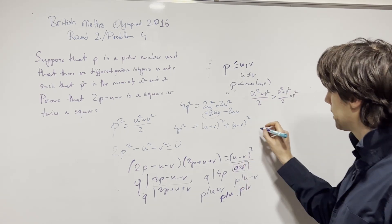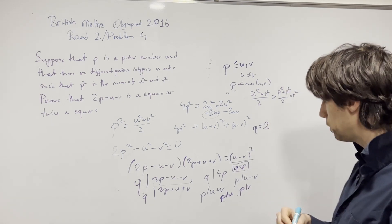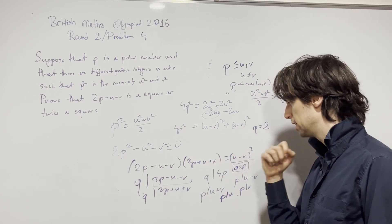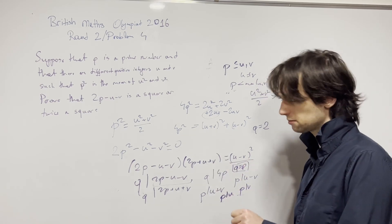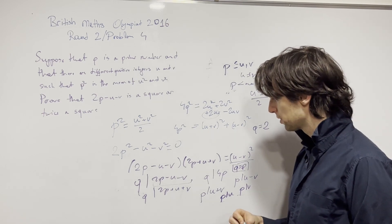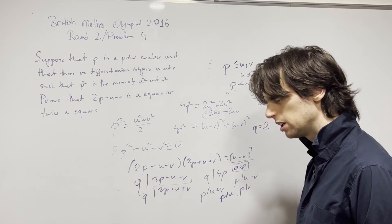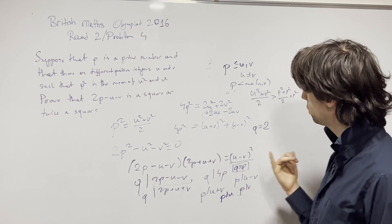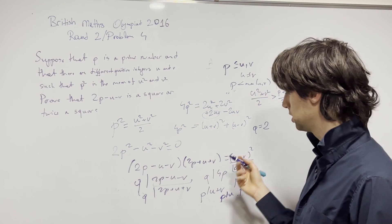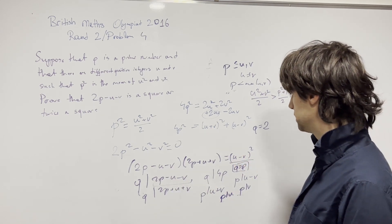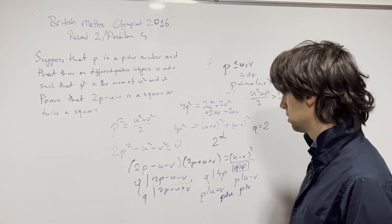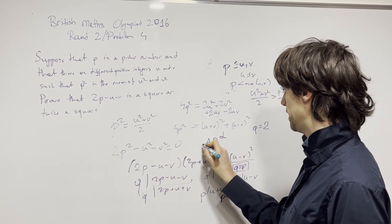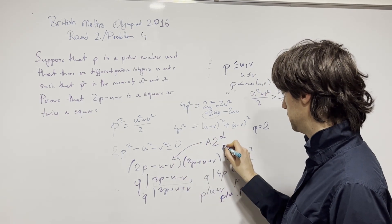Now we look at the case where q = 2. This means u + v is even, which also means u − v is even — these are equivalent. So the only prime that can divide gcd(a, b) is 2, meaning gcd(a, b) = 2^α for some α. Let's say 2p − u − v = 2^α · a and 2p + u + v = 2^α · b.